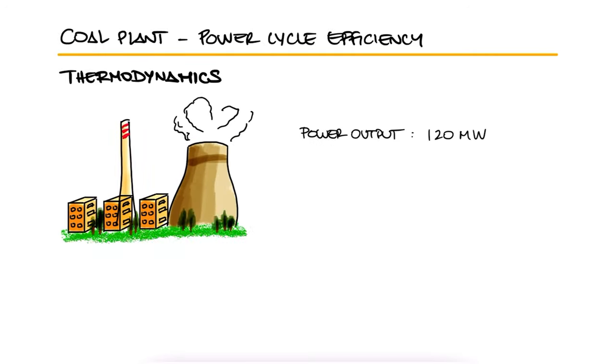A steam power plant with a power output of 120 MW consumes coal at a rate of 45 tons per hour. If the heating value of the coal is 30,000 kJ per kilogram, determine the overall efficiency of this plant.